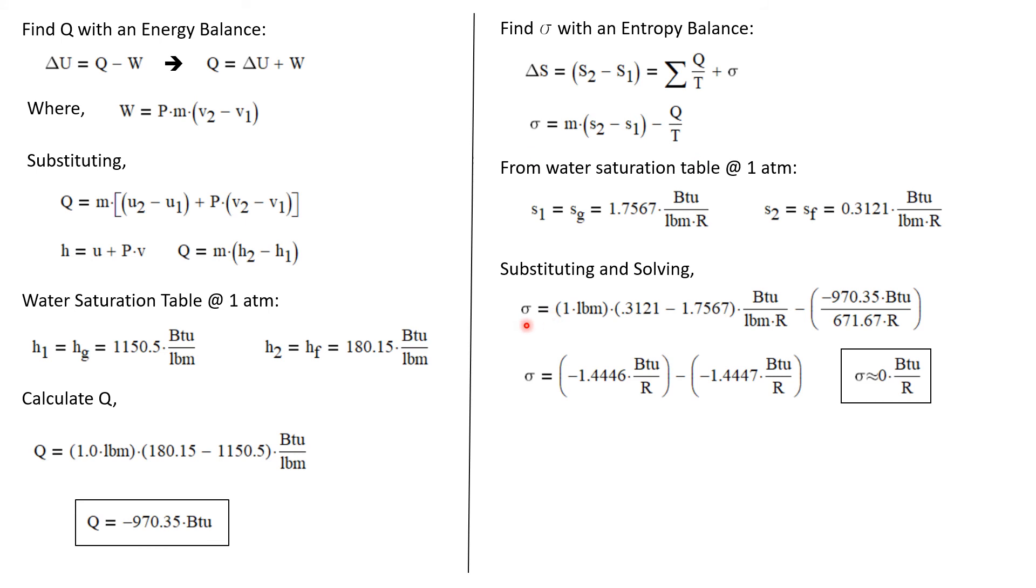Now we can substitute these values into our equation for entropy production, and we get that the entropy production is one pound mass times S2 minus S1 minus Q, which is minus 970 BTUs over the temperature at which it occurs, which is 671.67 R. I've carried the Q and temperature to more decimal places than I normally would, and I'm doing that for a reason. I'm trying to be more accurate here to make a point.